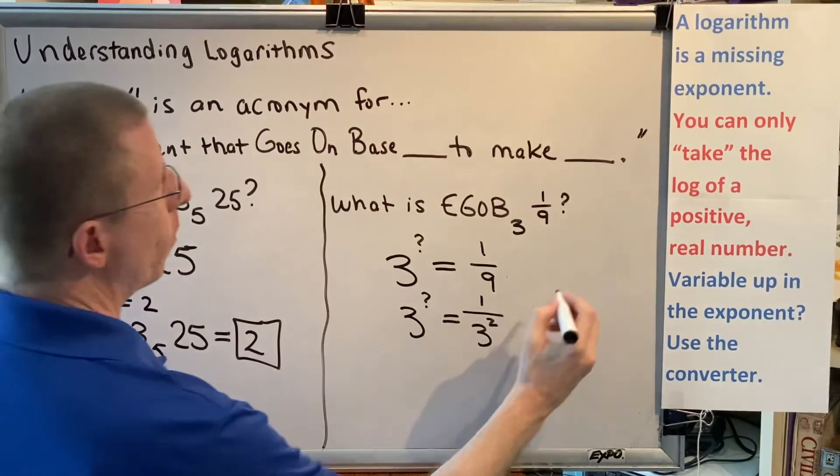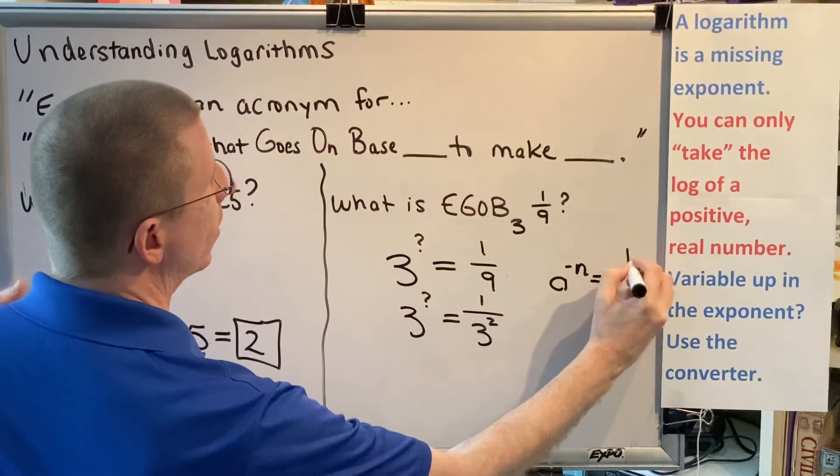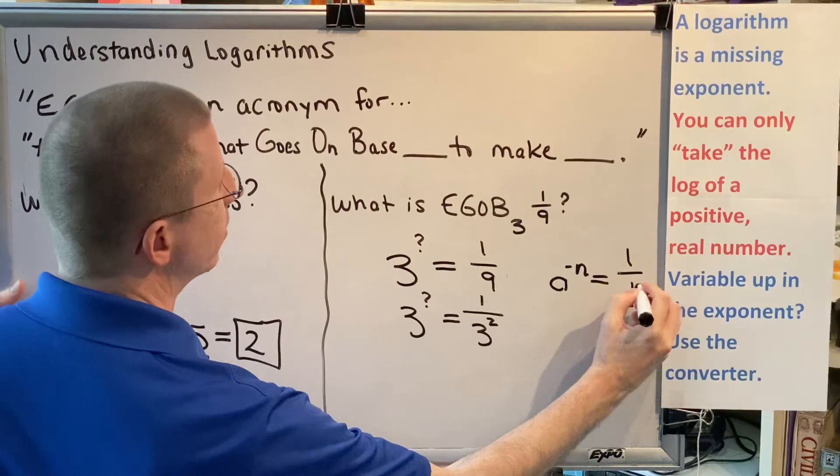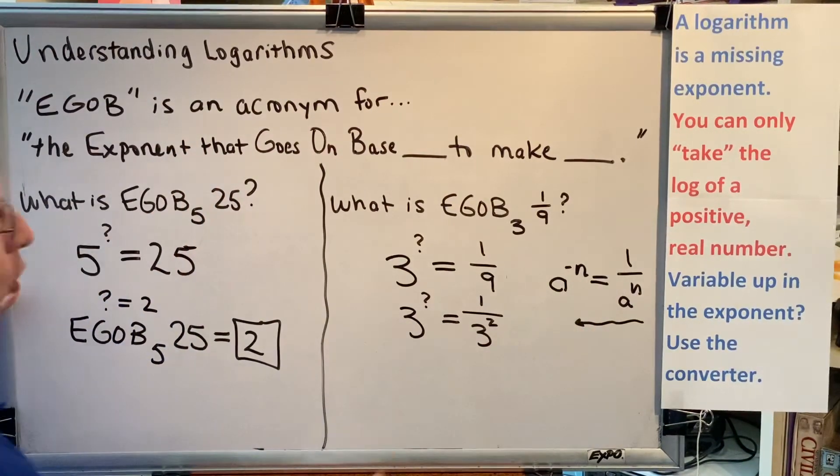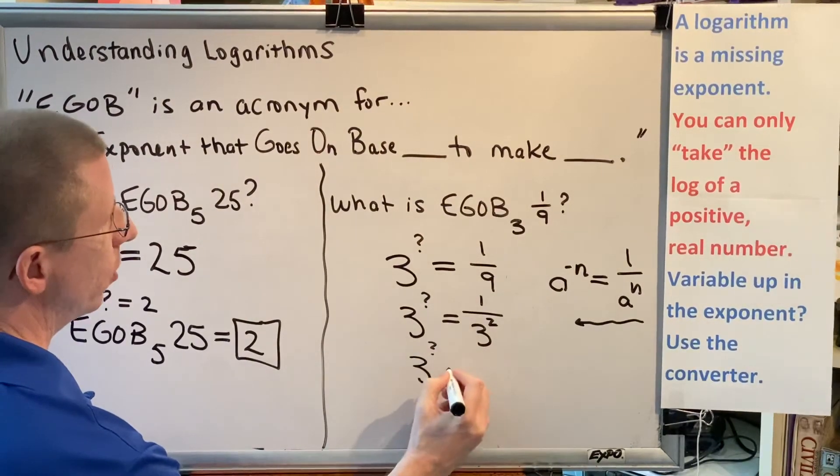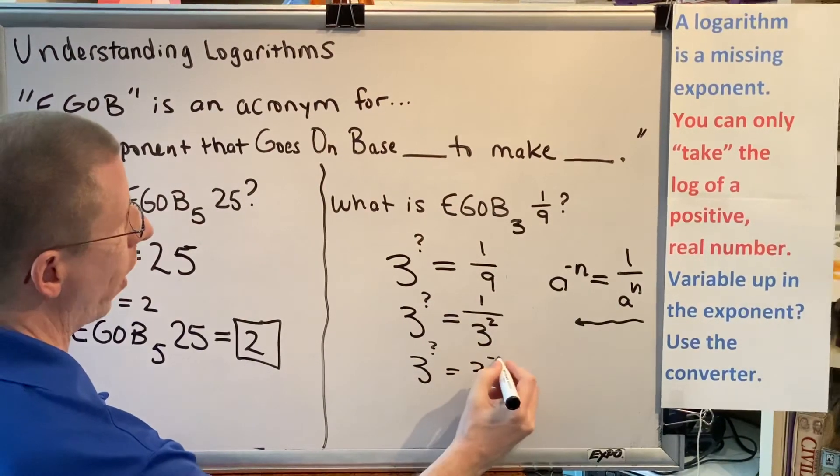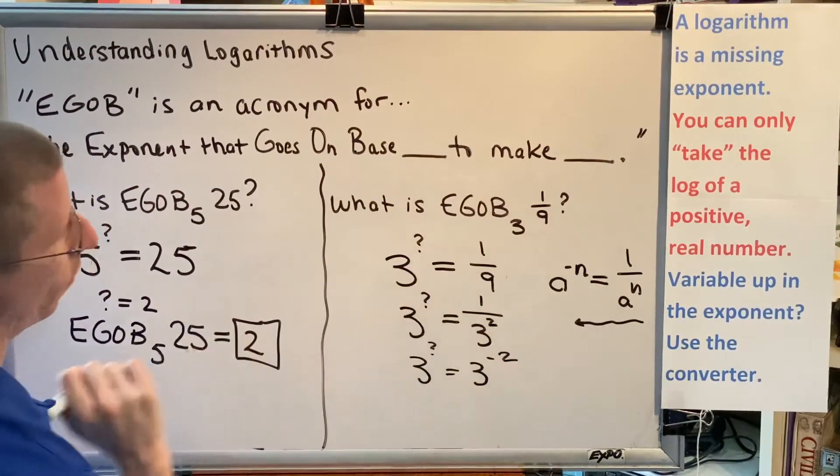Using an exponent rule from intermediate algebra, that a to the negative n is the same thing as 1 over a to the positive n. By the way, we're using this rule from right to left. We can rewrite the right side of this equation as 3 to the negative 2 power, because 3 to the negative 2 is the same thing as 1 over 3 to the positive 2.